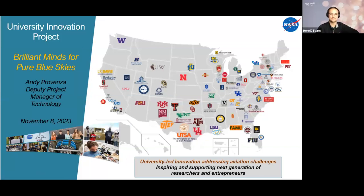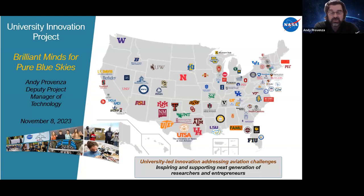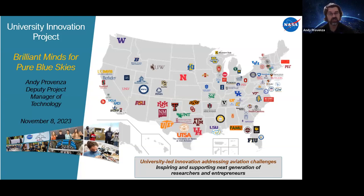Kevin mentioned he was from Langley. I'm from the NASA Glenn Research Center in Cleveland, Ohio — we're at the Turbomachinery Center of Excellence. A lot of folks there work in aeronautics, and a number are working on how to clean up the skies, how to make a plane travel farther on a tank of gas, make it quieter, and produce less emissions, especially harmful ones. I'm going to start out talking a little bit about our university innovation project and then get into the guts of this particular challenge.